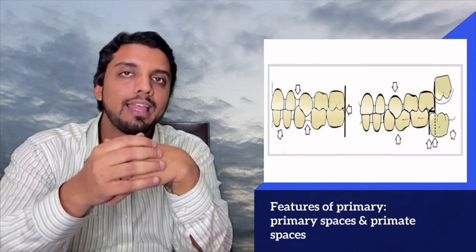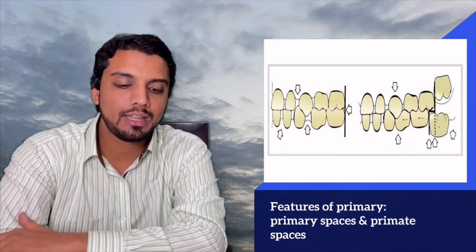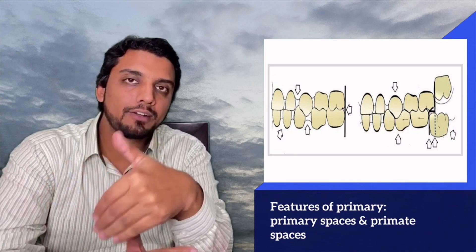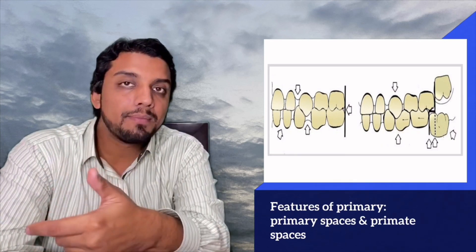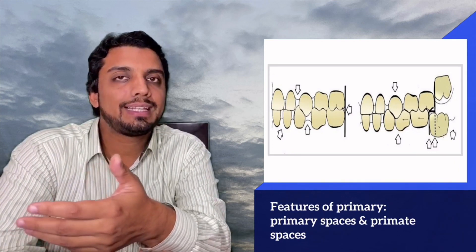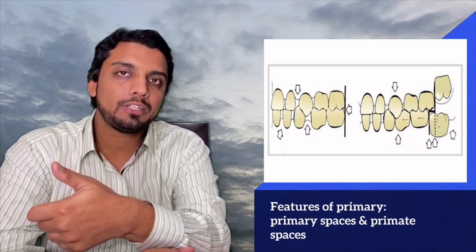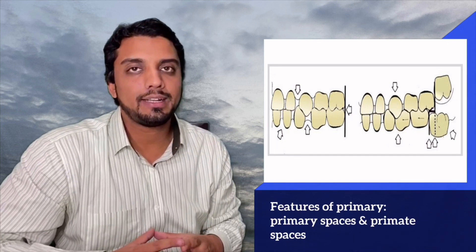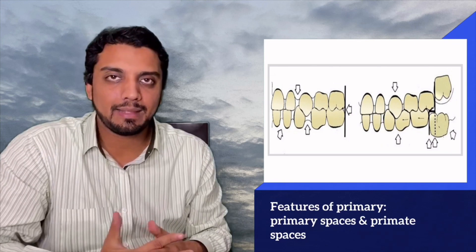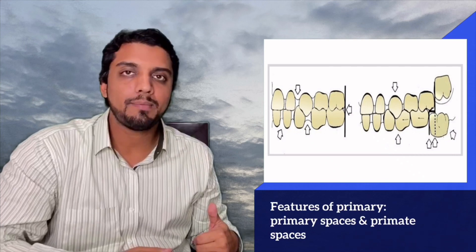Before going into the detail of how incisor liability is accommodated, we should have a good understanding of certain features of the primary dentition. The primary incisors are slightly retroclined. We also have primary spaces and primate spaces in the primary dentition. The primary space is the mild spacing between the primary incisors. The primate space is the accentuated space which is mesial to the primary canine in the maxilla and distal to the primary canine in the mandible.